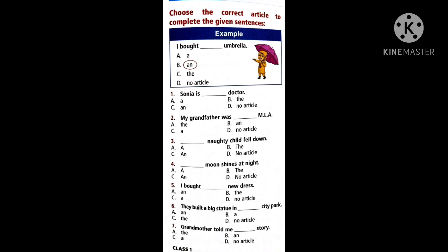Dash moon shines at night. Now, I bought dash new dress. So read the context and you want to take the correct answer. They built a big statue in dash city park. Which city park? We don't know here particularly. So what we want to use here?